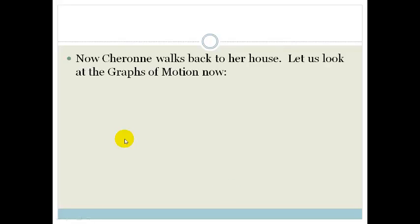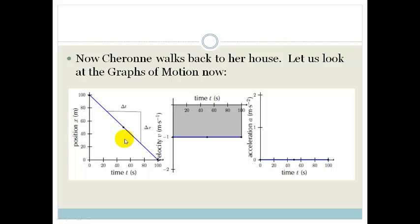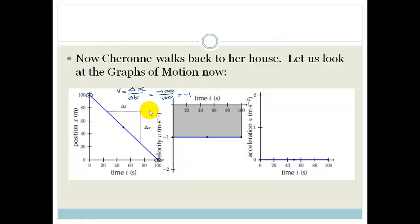Now let's look at another one, where she walks back to her house. Again we're looking at a constant velocity, but this time she's going back. She started with a displacement of 100, and she's moved back to a position of 0. If we look at velocity equals change in displacement over change in time, we get minus 100 over 100, which is minus 1. So the gradient gives us our velocity of minus 1 meter per second — the magnitude is 1 but she's traveling backwards, so it's negative. Since she has constant velocity, her acceleration is 0.